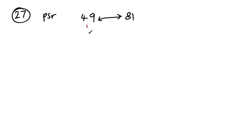So the square root of 49 is 7, square root of 81 is 9. So the number between 7 and 9 is 8.